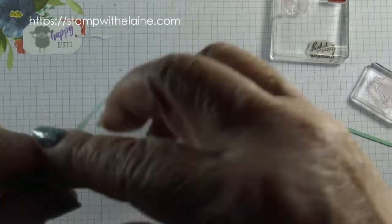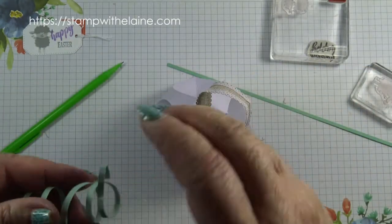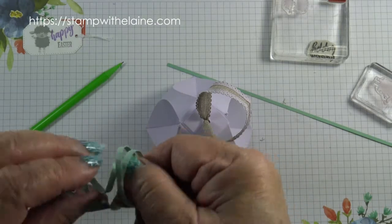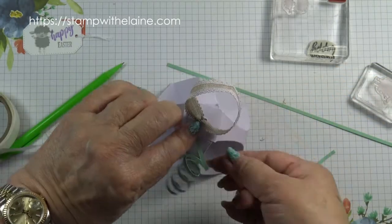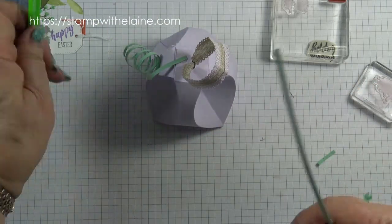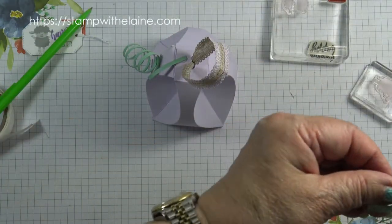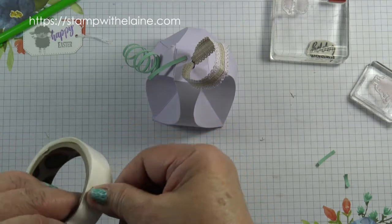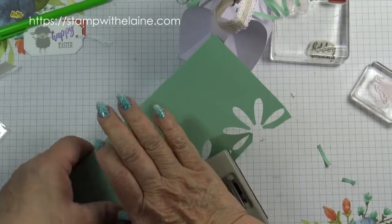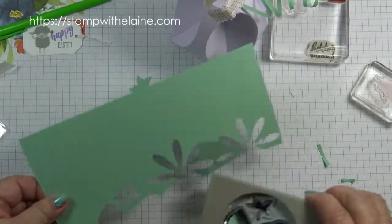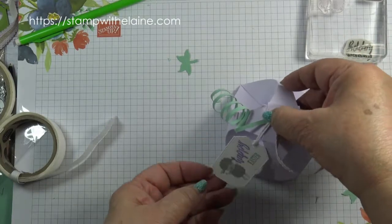Now to do the tendrils. Wind this around the pencil like so. You can twist it some more if you like to make it smaller. Snip off a bit of the end. Again, attach a glue dot. Wind this around a pencil or your stylus. Take the strawberry punch and punch out two leaves.